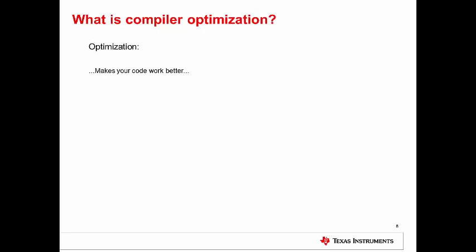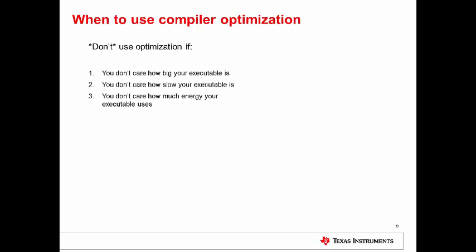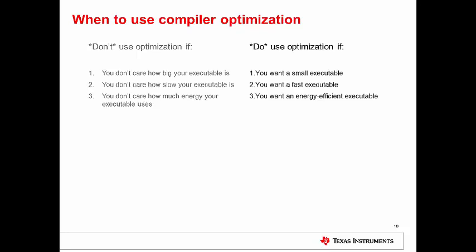Optimization makes your code work better. When do we use it? Well, don't use optimization if you don't care about your executable — how big it is, how fast it runs, how much energy it burns. Do use optimization if you're trying to do a good job — if you want your executable to be smaller, faster, or more energy efficient.